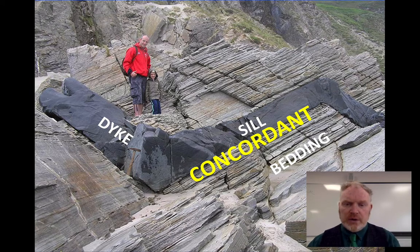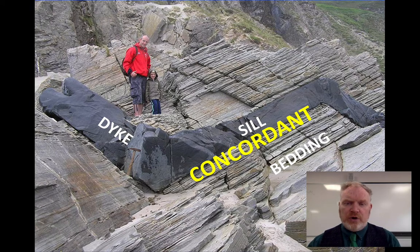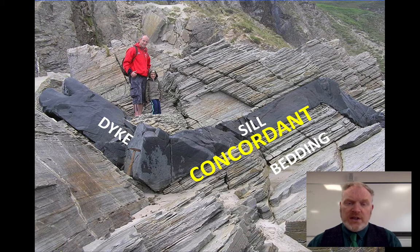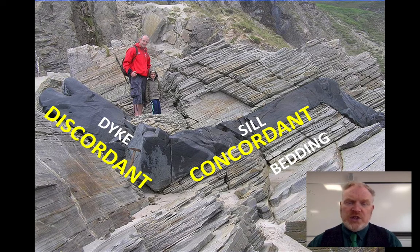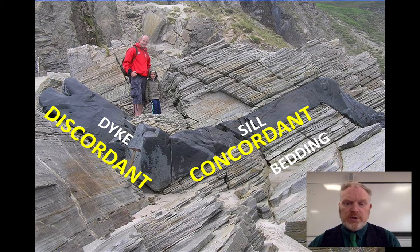Concord means agreement — so the sill follows the layers within that country rock. That's what makes it a sill. The dike, on the other hand, is at right angles to that bedding — it cuts across it. So we describe that as being discordant. Discord means disagreement.